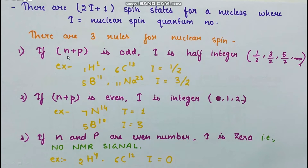There are some rules. If the sum of neutrons is odd, I will be a half integer — for example if the total protons plus neutrons is 1, I will be 1/2; if it is 3, I will be 3/2. The second rule is: if the number of protons plus neutrons is even, I is an integer — for example, 7 protons plus 7 neutrons equals 14, so I will be 1. And if both the number of neutrons and the number of protons are even, I will be 0, meaning no spin states and no NMR signal.